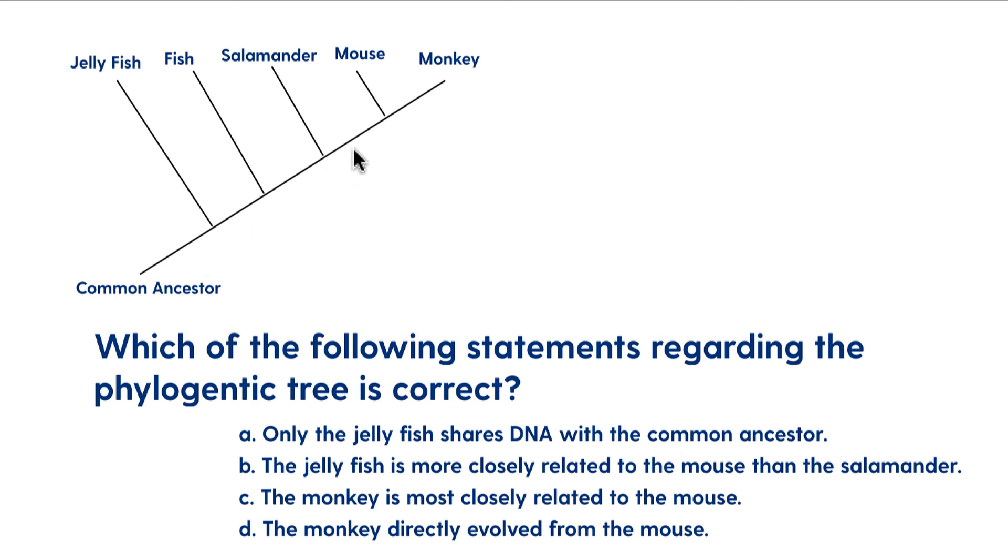We're saying that there's a common ancestor at this point here, that the mouse and the monkey have a common ancestor. And same thing here. We can say that the salamander, the mouse, and the monkey all have a common ancestor at this point here in time. We don't know what it is. We're not indicating what it is. We're not saying that they evolved from each other. All right, so the correct answer is, in fact, C, the monkey is most closely related to the mouse.